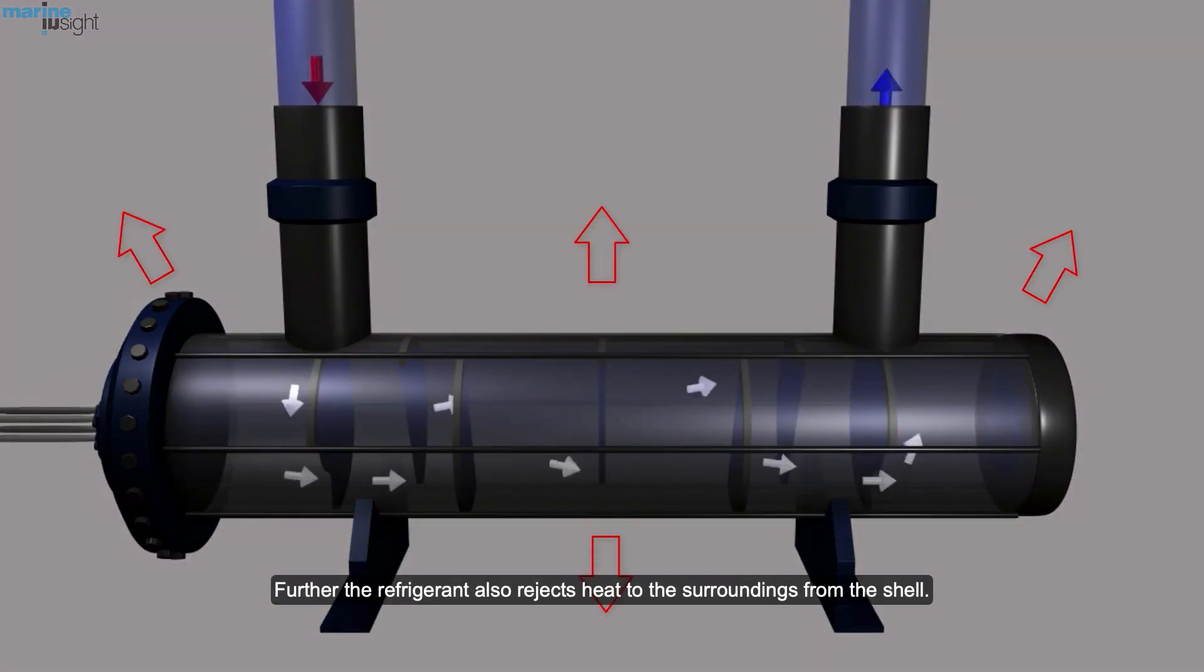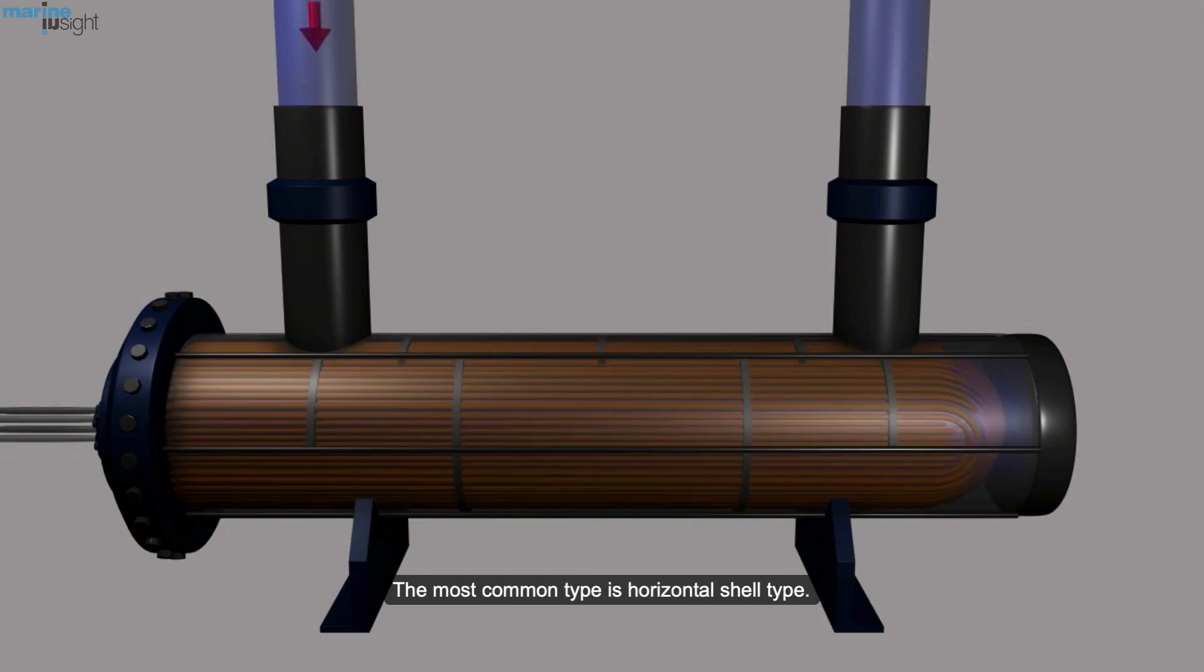Further, the refrigerant also rejects heat to the surroundings from the shell. The most common type is horizontal shell type.